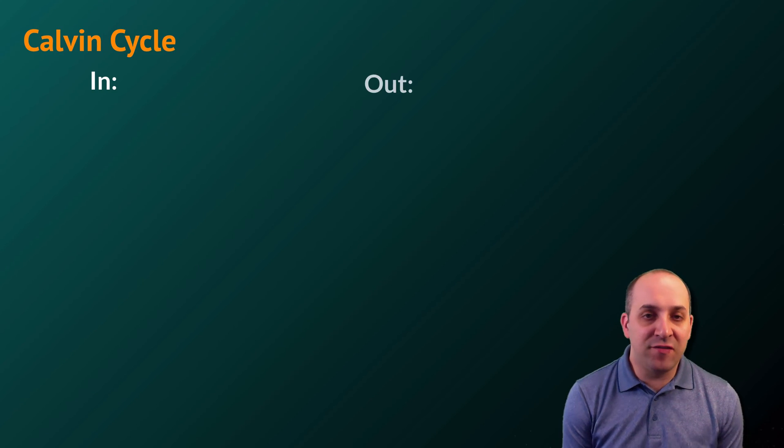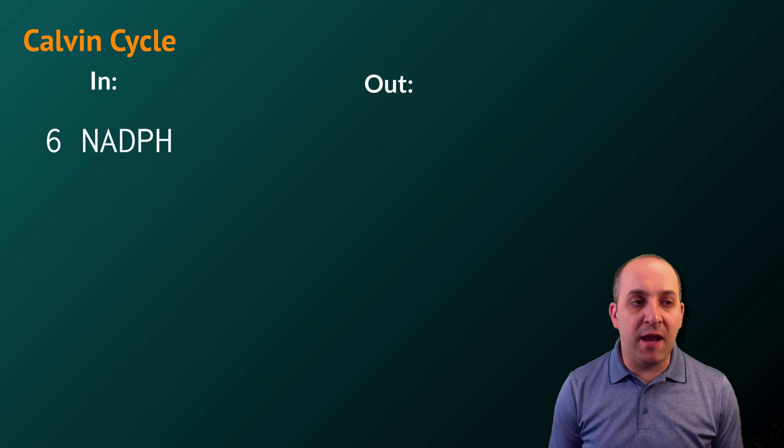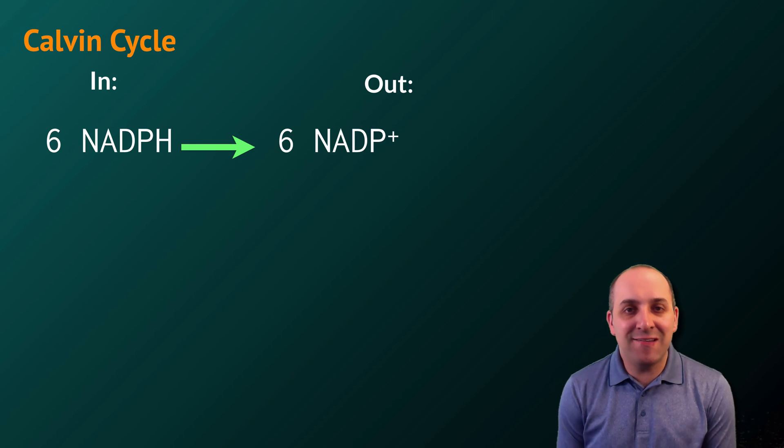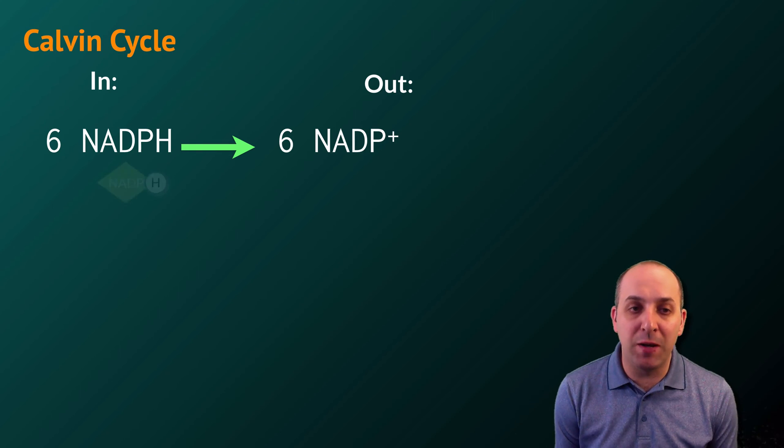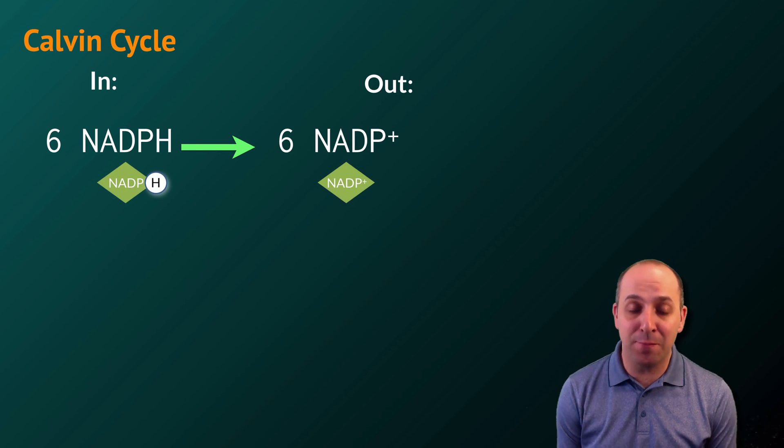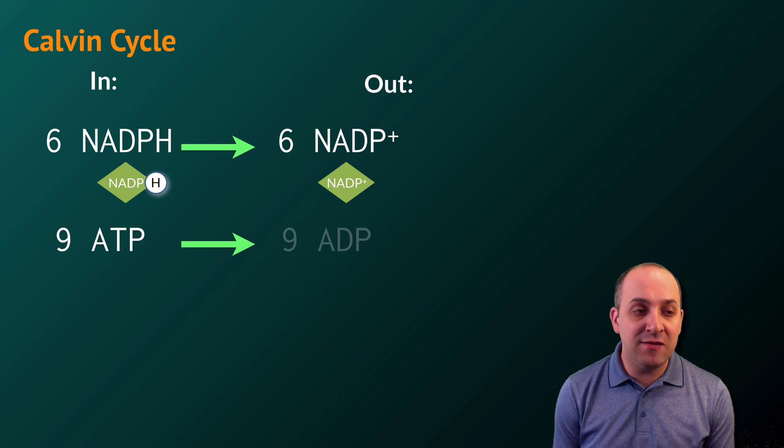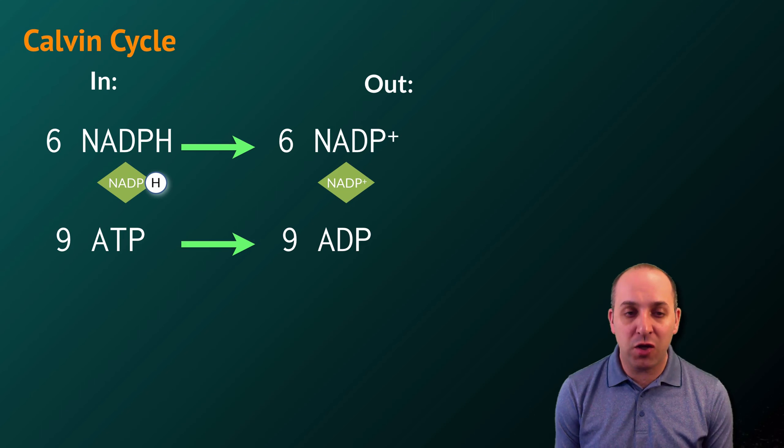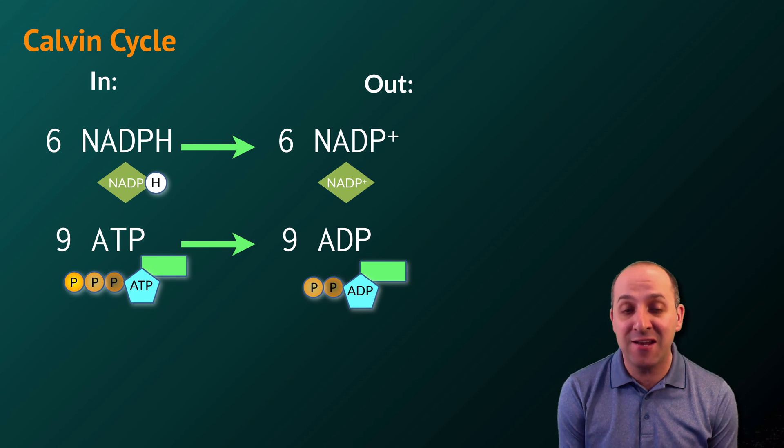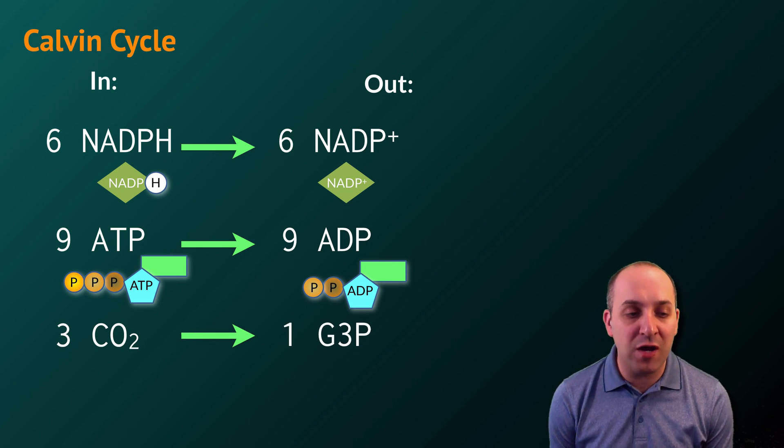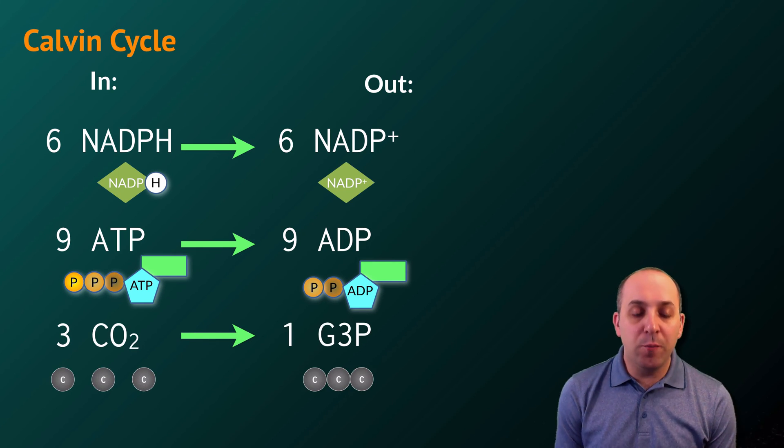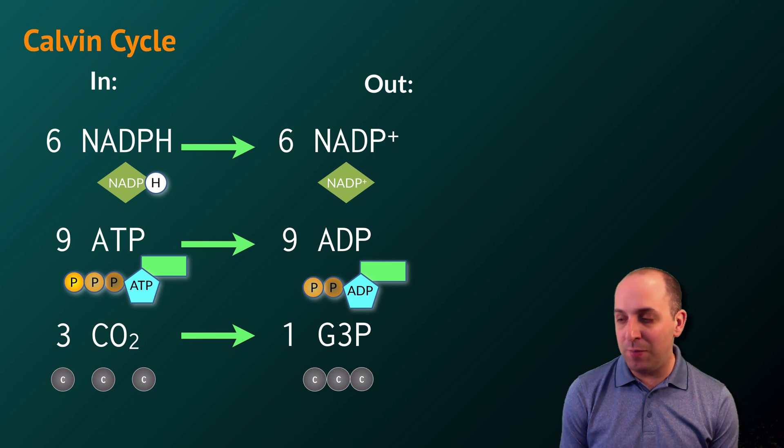Looking at our accounting for the Calvin cycle, let's see what we put in and what we get out. We'll need to invest six NADPH molecules, which will be converted back to six NADP plus molecules to reenter the light-dependent reactions. We'll need to invest nine ATP molecules, which will be converted back to nine ADP molecules, which are also put back into the light-dependent reactions. And we will take in three CO2 molecules, which will be used to produce one G3P molecule.